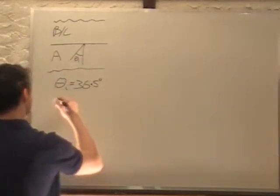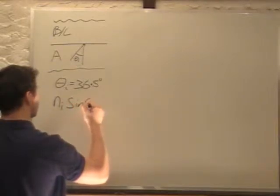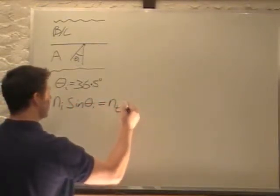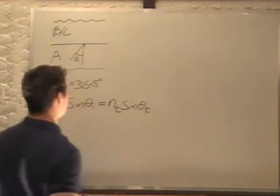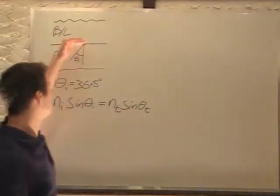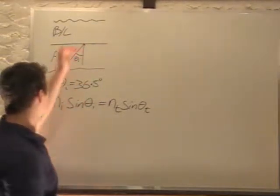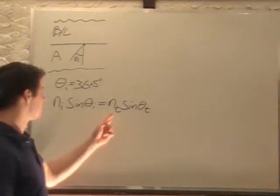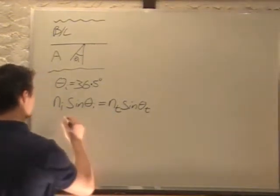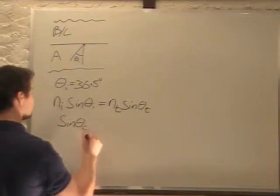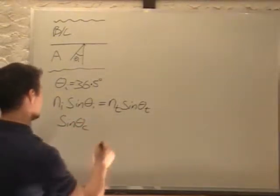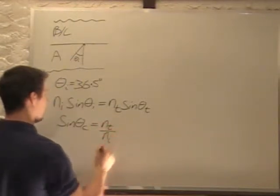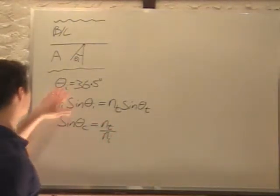If we put this in our formula, n_i sin(theta_i) equals n_transmitted sin(theta_transmitted). It's a critical angle because at this point we get 90 degree transmission. So sine 90 is just 1, so it's just n_T by itself. So sin(theta_critical) equals n_T over n_i. This is our critical angle.